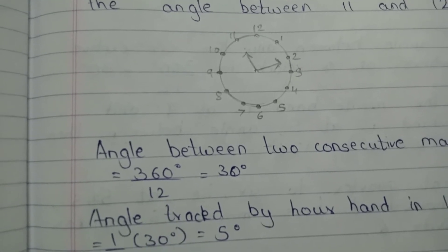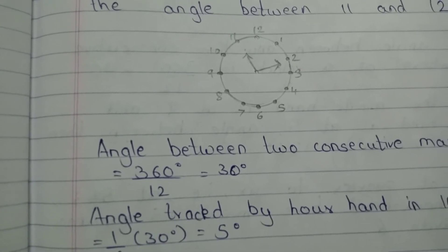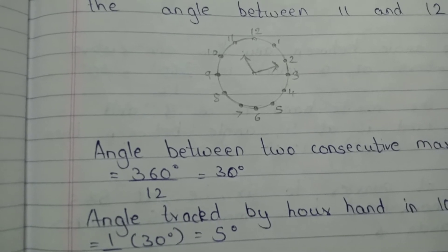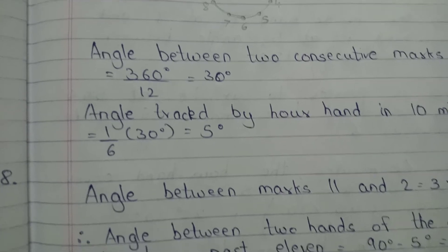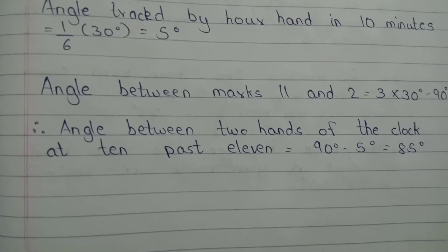Because the hour hand has moved a little bit forward from 11. It is not exactly at 11, it has moved a little bit forward. So that is one-sixth part, and that 5 degrees is going to be subtracted.